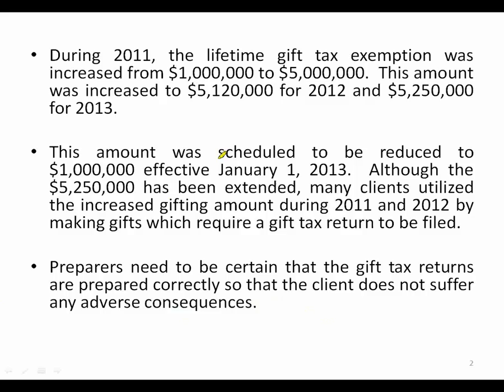During 2011, the lifetime gift tax exemption was increased from $1 million to $5 million, then to $5,120,000 for 2012. Originally, if Congress took no action, it was scheduled to revert back to $1 million on January 1, 2013. Congress did act, extending and making the exemption permanent and indexed for inflation at $5,250,000. Because of that uncertainty, most clients made gifts in 2011 or 2012, utilizing the extra $4 million worth of exemption.